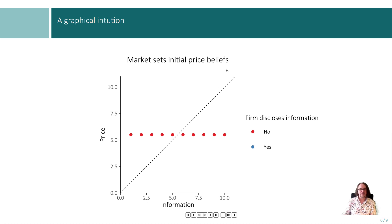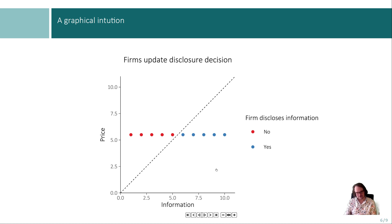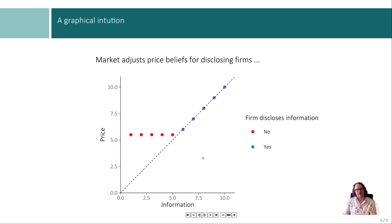The five firms right of the 45-degree diagonal are undervalued, and they have a strong incentive to disclose. They announce their information: I'm 6, I'm 7, I'm 8, I'm 9, I'm 10. The market, because the information is trustworthy, accepts it and adjusts their prices accordingly. So now firms 6 through 10 are priced at value, right on the diagonal.